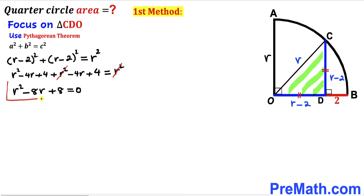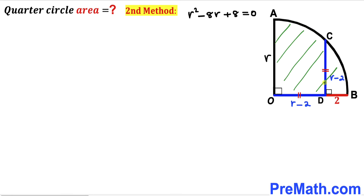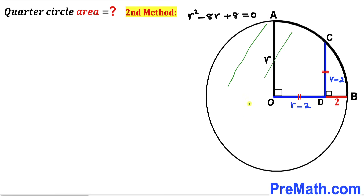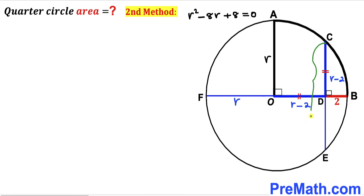We've arrived at the quadratic equation r squared minus 8r plus 8 equals zero. Now I'm going to show how to obtain this same quadratic equation using a second method. Let's focus on the whole quarter circle and consider the full circle, where OF and OB are both radii of lowercase r.